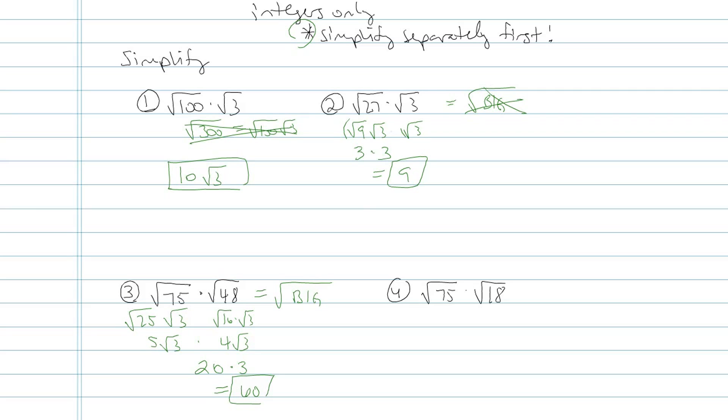One last one. Again, 75 times 18, I don't know what that is. I don't even want to calculate it. What I want to do instead is work with these numbers that are not so unfriendly. 75 I know is 25 times 3, so that'll become 5 root 3.